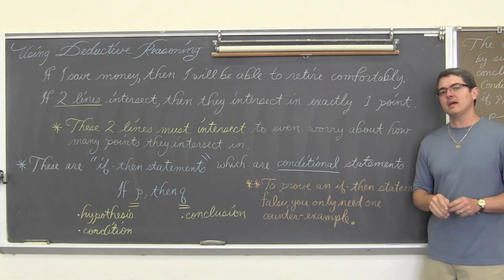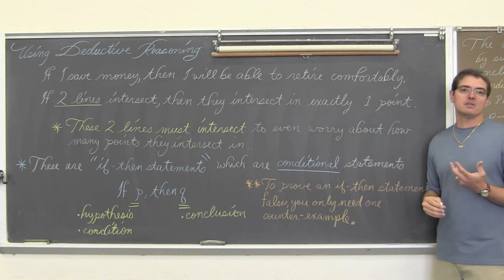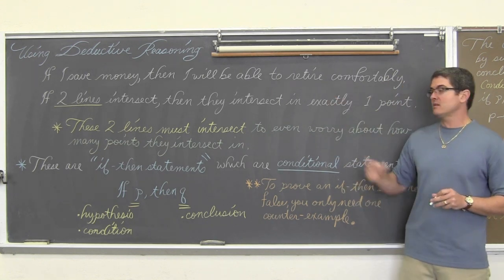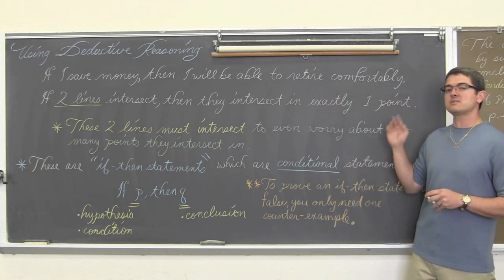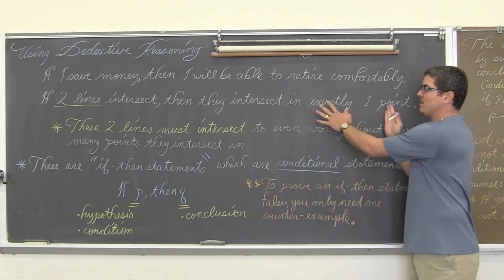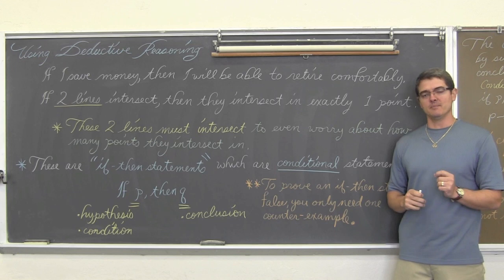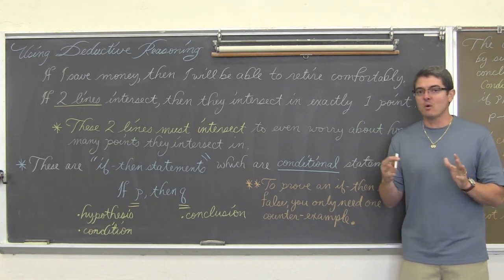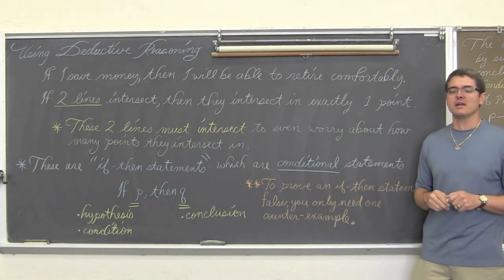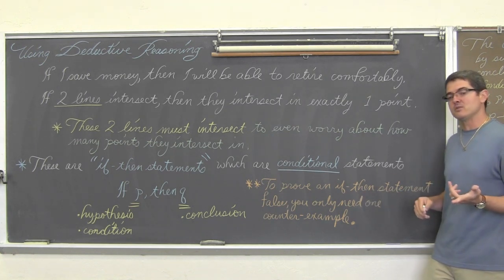To prove an if-then statement false, you only need one counter-example. It is actually very difficult to prove a mathematical statement true. If we say that two lines intersect and they only intersect in exactly one point, this must work for all settings. If this were to work a billion times and fail once, it would be considered mathematically a false statement. So to prove something true is what we will learn in our two-column proofs coming up. But to prove something false, you only need one counter-example.